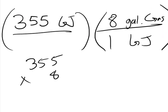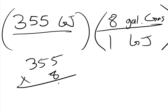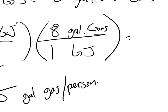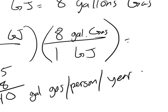355 times 8 looks like this. 8 times 5 is 40. 8 times 5 is 40, plus the 4 remainder is 44. 8 times 3 is 24, plus the 4 remainder is 2840 gallons of gas per person per year in the U.S.